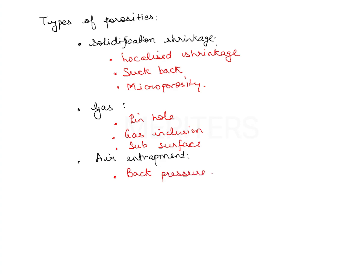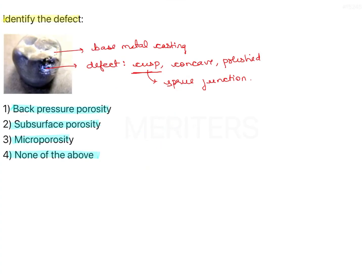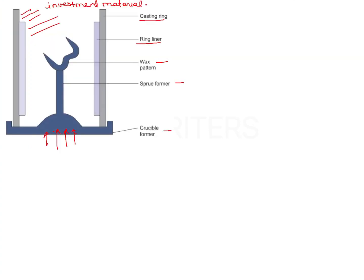Now let's try to understand each type of porosity option wise. First option is back pressure porosity. What happens in back pressure porosity is that if you do not have enough height, the recommended height is that one fourth of the whole casting assembly should be there.